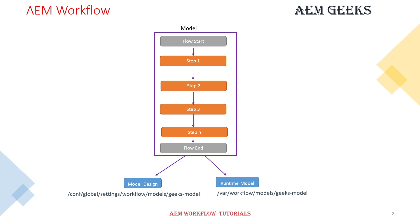Now let's talk about these steps. These steps are of four kinds. First is the Container step — when you want to trigger another model or another workflow from within this workflow. For example, if you want to execute a child workflow, you use the container step. Second is the Participant step — when you want human interaction in your workflow, such as assigning a task to someone, you use the participant step.